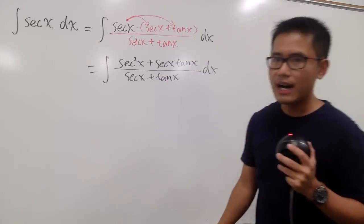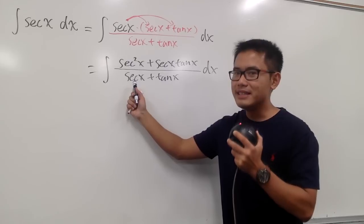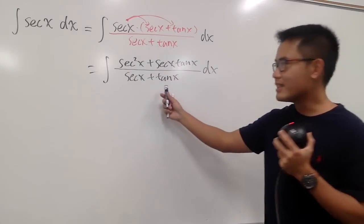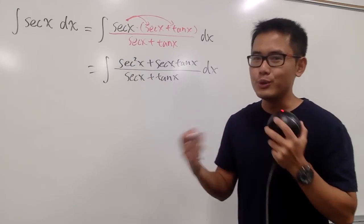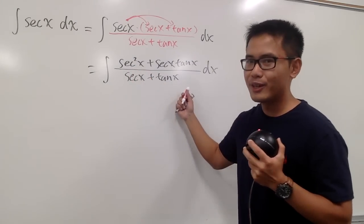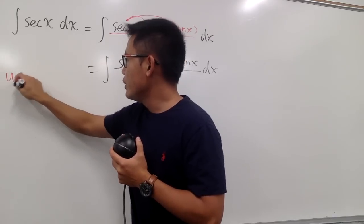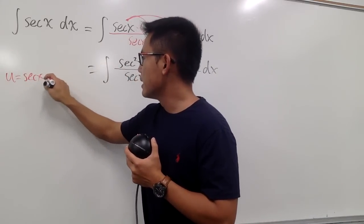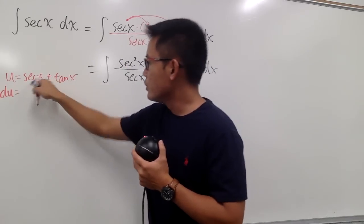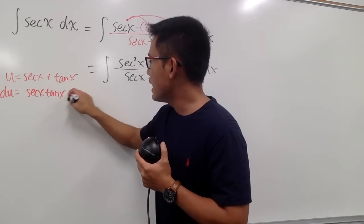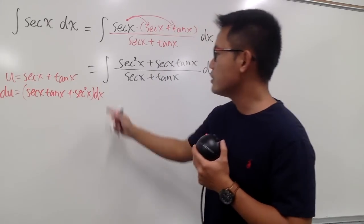This is over secant x plus tangent x. Now check this out: if you look at the denominator, what's the derivative of secant x? It happens to be secant x tangent x, which is right here. And the derivative of tangent x is secant squared x, which is also right here. So we can do a u-substitution. Let u equal the denominator, secant x plus tangent x, and everything will work out nicely.